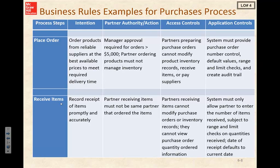On the receiving side, our intention is to record the receipt of items promptly and accurately. For partner authority, the partner receiving the items must not be the same partner that ordered those items. Access controls specify that partners receiving items cannot modify purchase orders or inventory records, and they cannot view purchase order quantity ordered information.